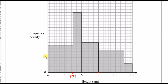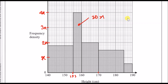To find the total number of students, label the frequency density major lines as x, 2x, 3x, and 4x. The block from 155 to 160 has base 5 and height 4x, giving area 20x. The block from 160 to 170 has base 10 and height 2x, giving area 20x. Combined area 40x equals 160, so x equals 4. The frequency density values are now 4, 8, 12, and 16.